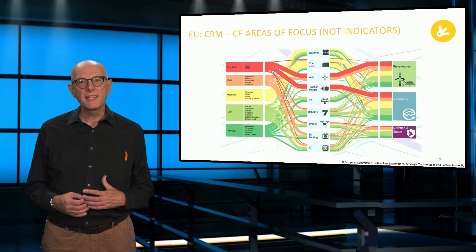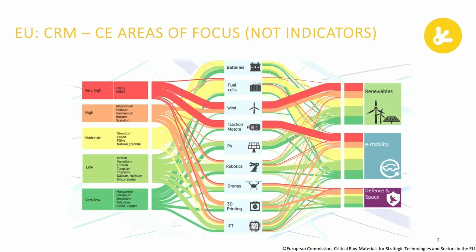Governments and governmental bodies can develop actions around critical materials, which, while they are not indicators in themselves, can provide information around the direction of travel. You see here the European Union has on the left-hand side defined the critical materials list, with red being the highest criticality and dark green the lowest. On the right-hand side, the EU identifies three application areas: renewable energy, e-mobility and space and defence. Between the critical materials and application areas, there is a list of technologies. This image could be useful when considering critical material indicators.